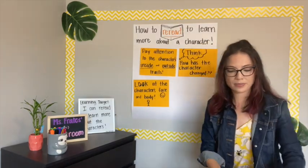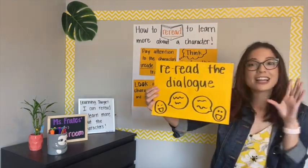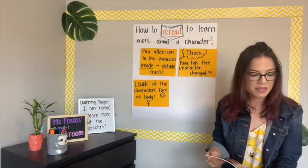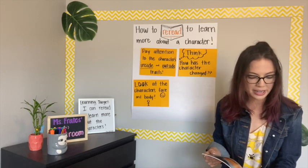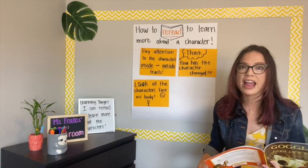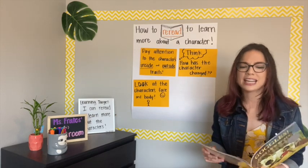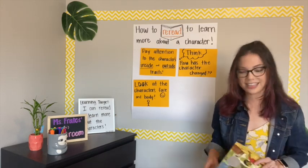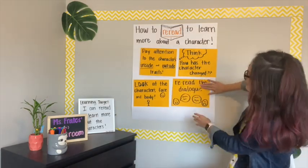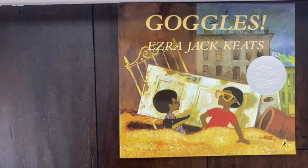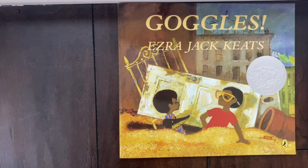And lastly, you need to reread the dialogue — that's where the characters are talking to each other. When I first read this book, I read a line that said, 'Archie, hold Willie, said Peter.' But now that I've read the book all the way through and feel like I know the characters better, I feel like I should read that line differently. I'm going to read Goggles by Ezra Jack Keats one more time. Pay attention to the characters' faces and bodies and how they talk to each other. Also think about their inside and outside character traits and if they change throughout the book.